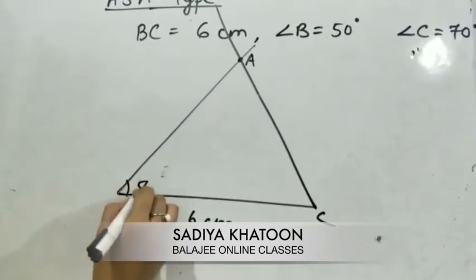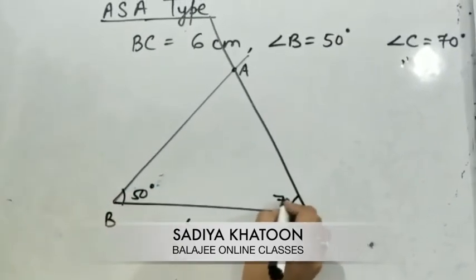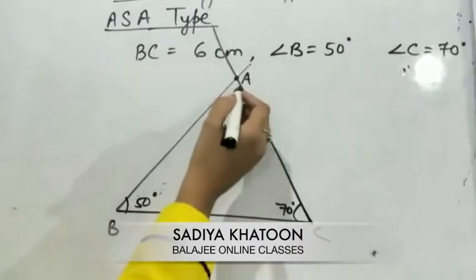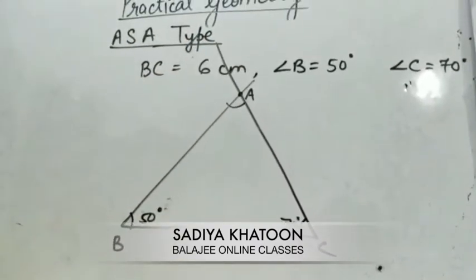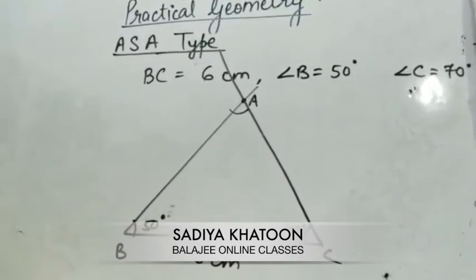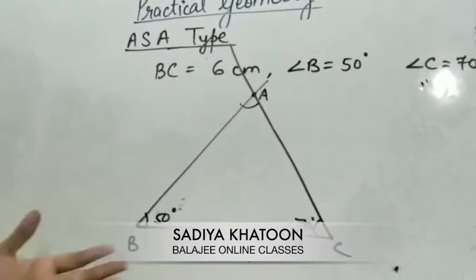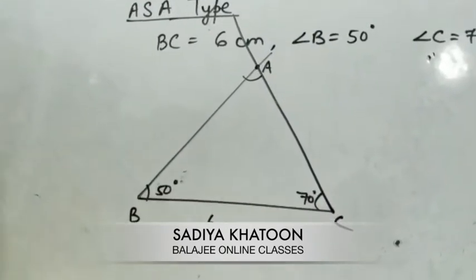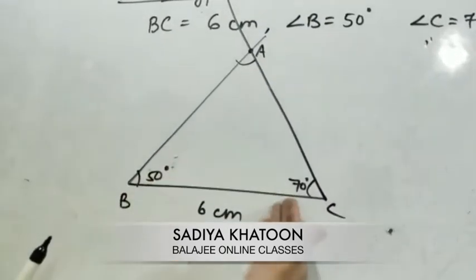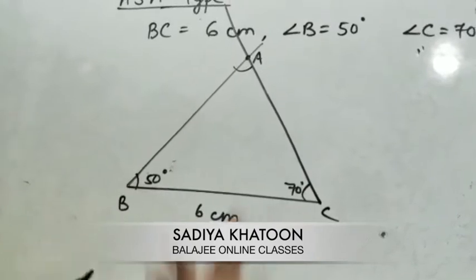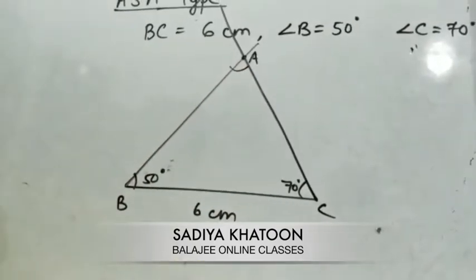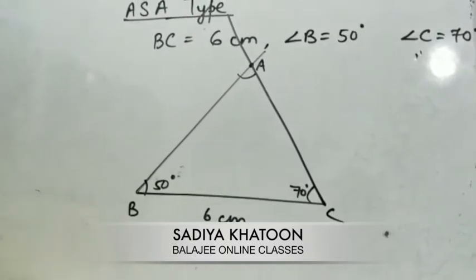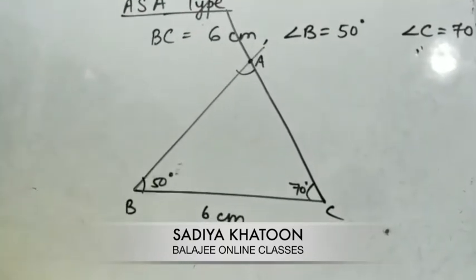Angle B is 50 degrees, angle C is 70 degrees. Sometimes you may be asked for angle A. You apply the triangle angle sum property: all angles sum to 180 degrees. So 50 + 70 = 120, and 180 − 120 = 60 degrees. Angle A is 60 degrees. This is how you can also calculate the third angle when it is not given.